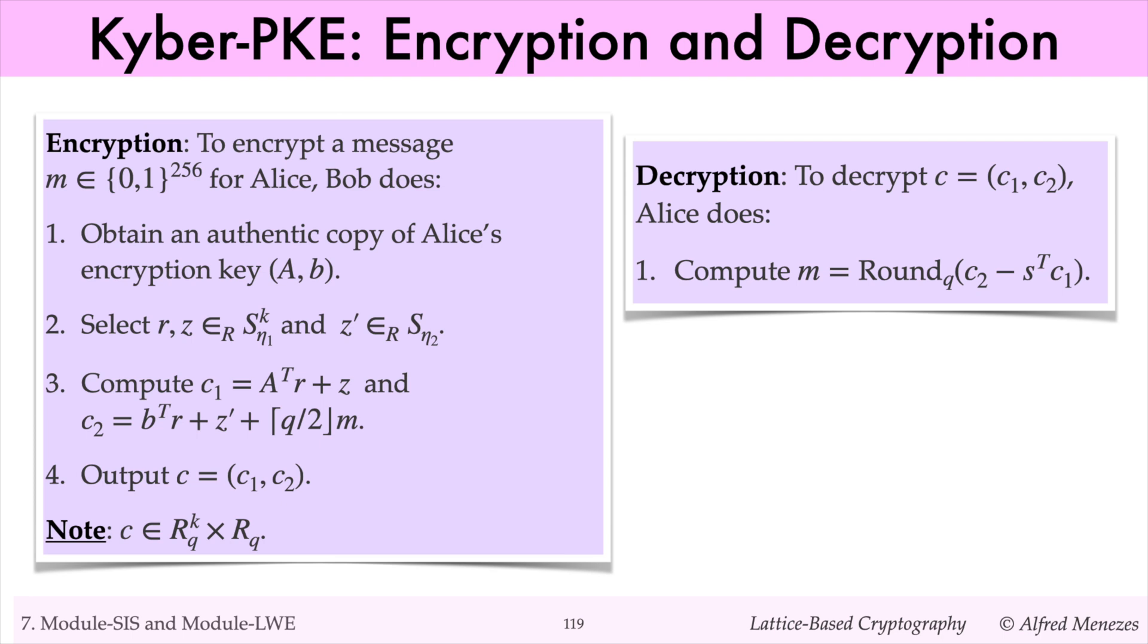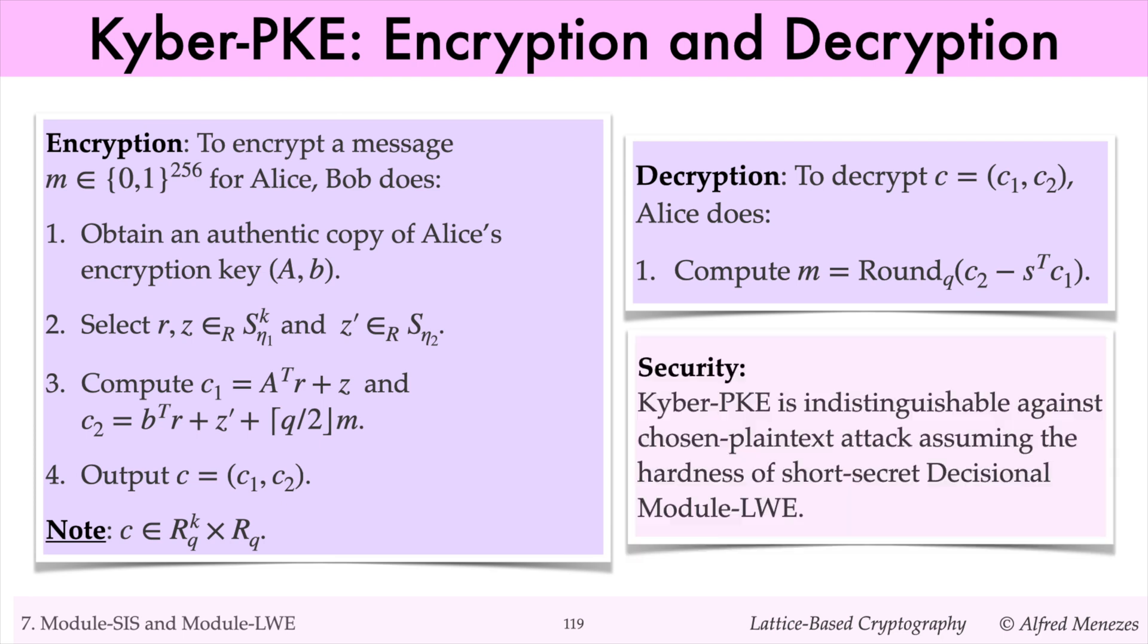To decrypt C, Alice uses her private key S to compute the polynomial C2 minus S transpose times C1, and then rounds its coefficients to retrieve M. As an exercise, you can prove that the encryption scheme is indistinguishable against chosen plaintext attacks, assuming that the short-secret decisional module LWE problem is hard.